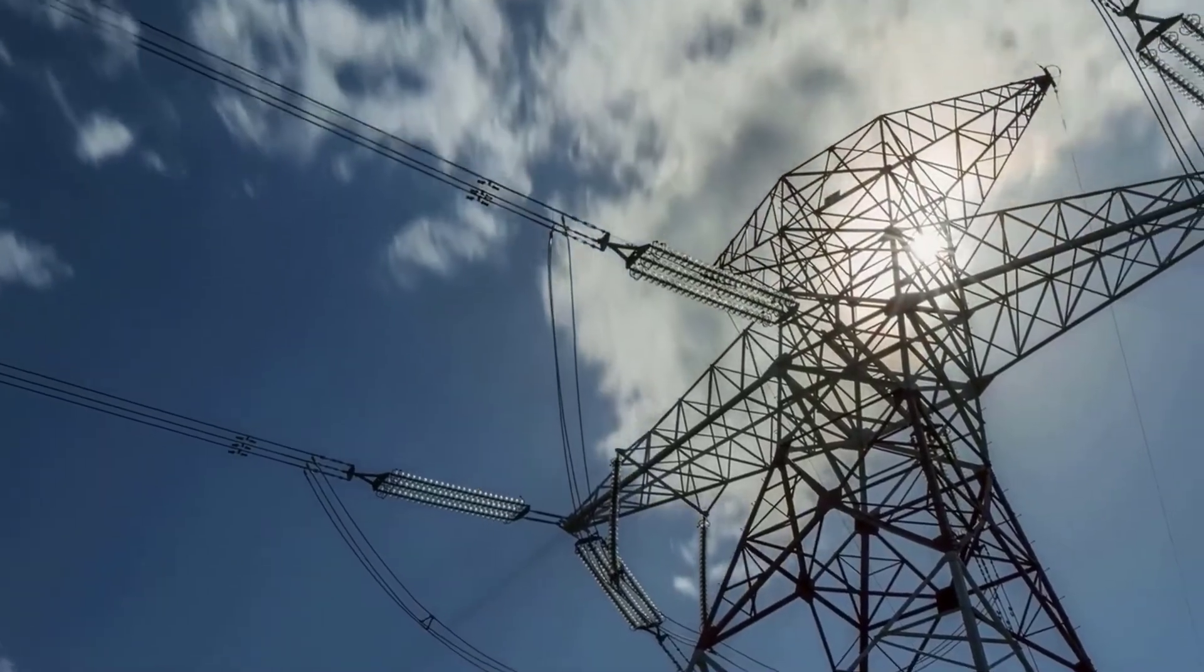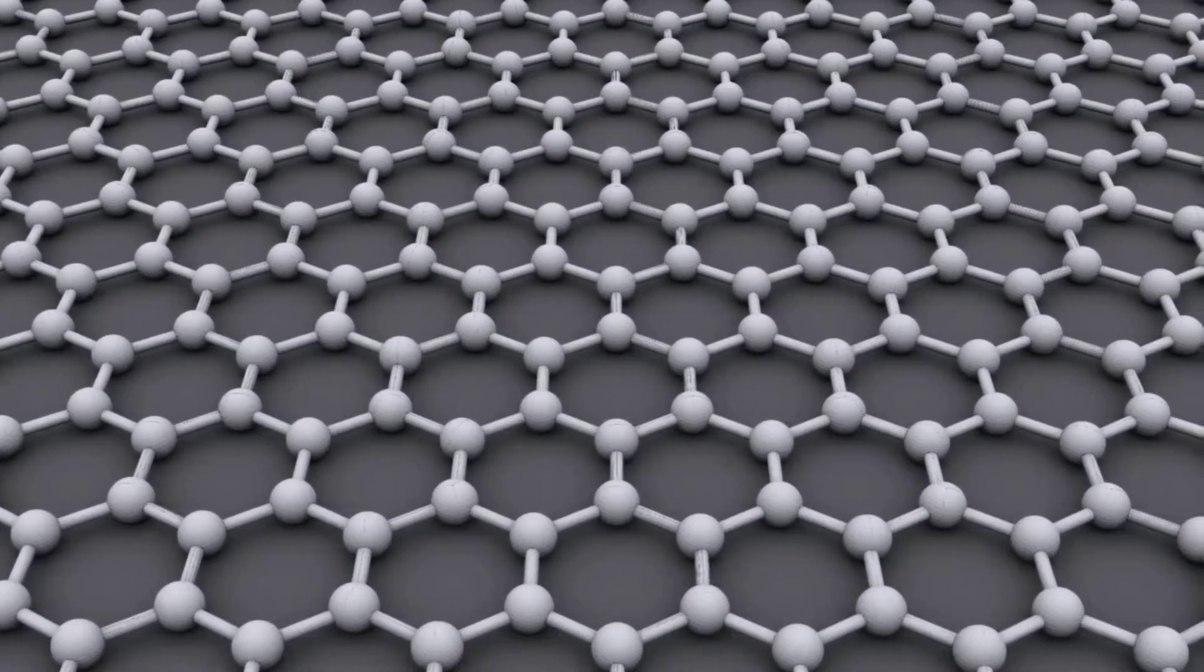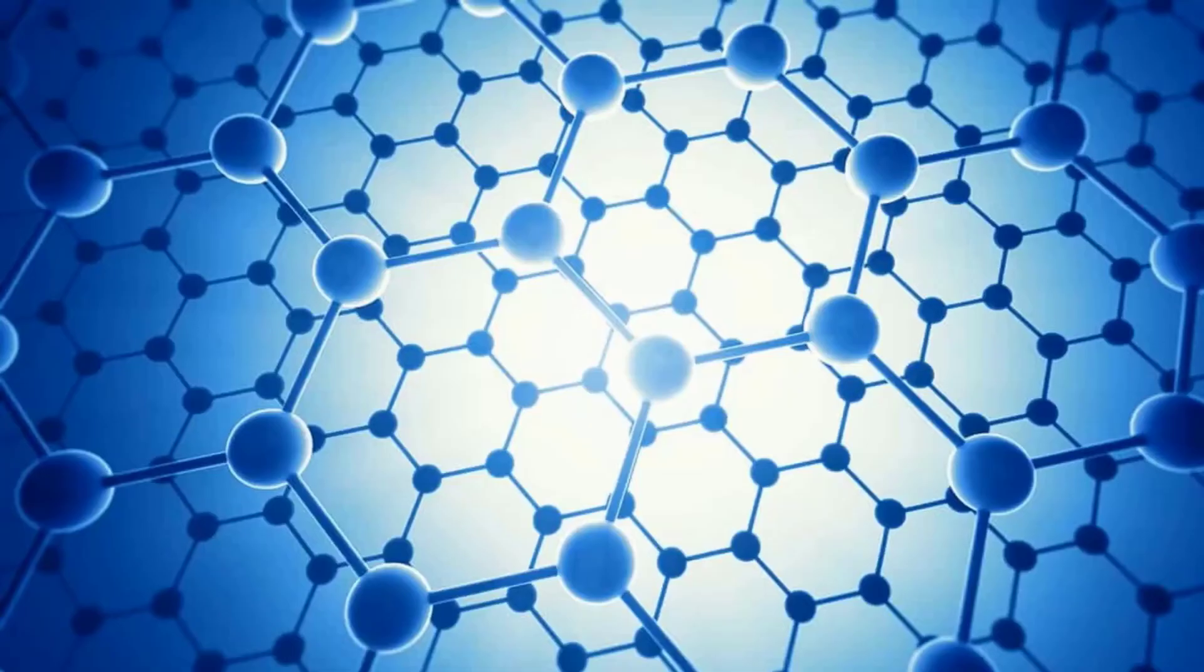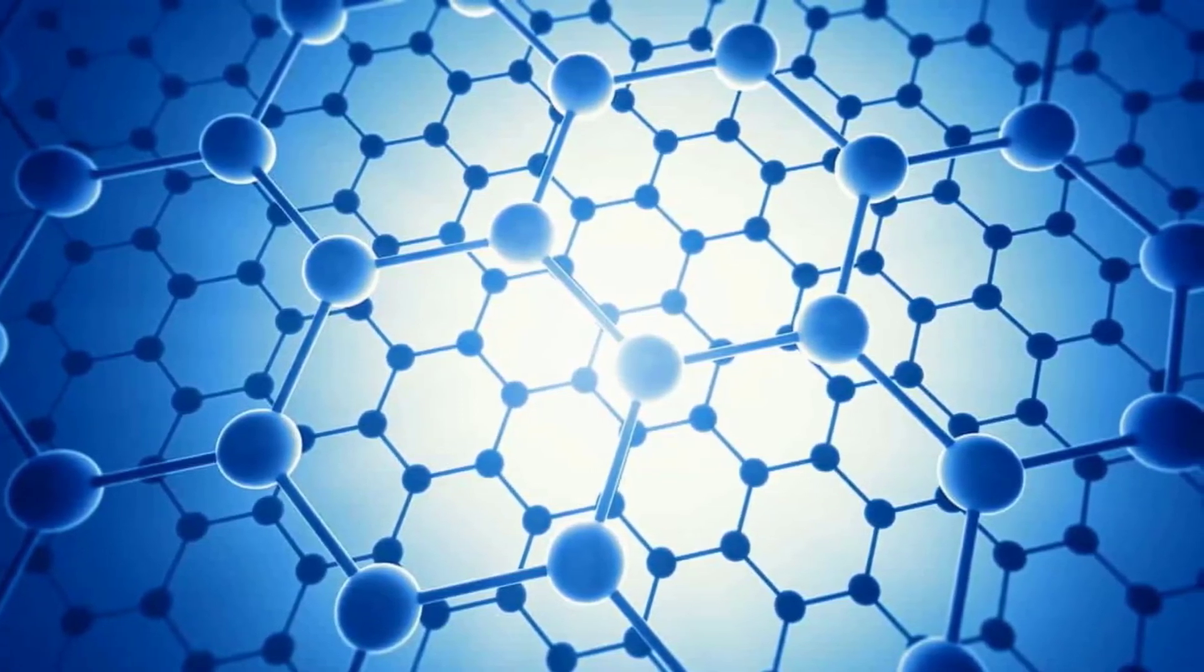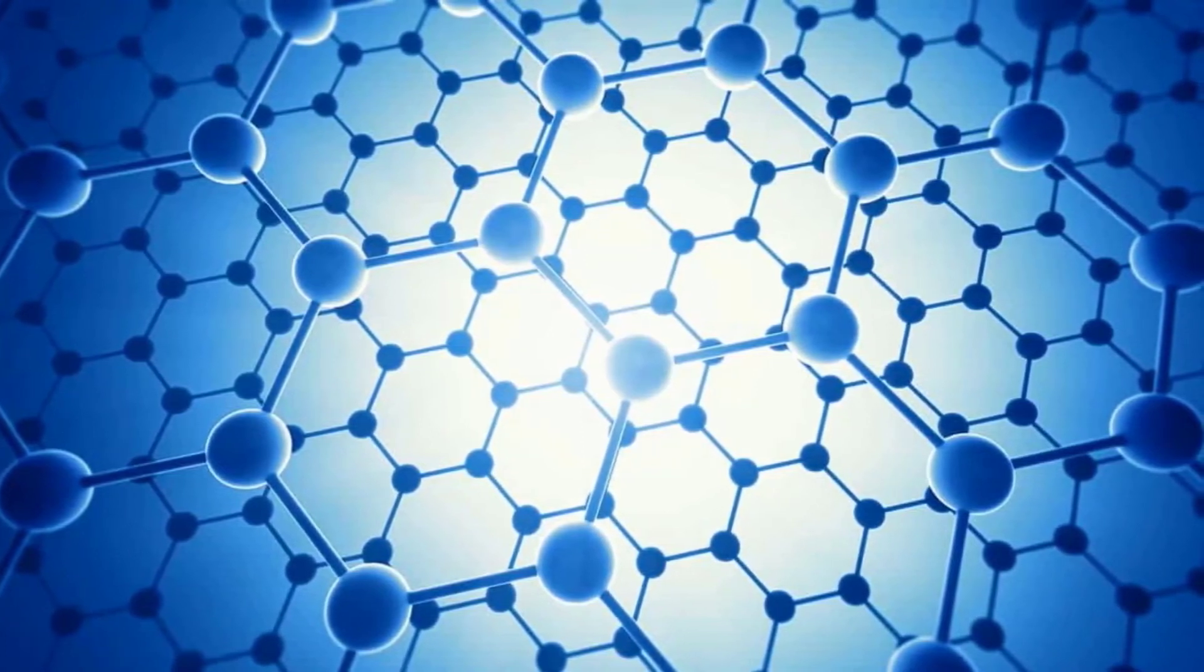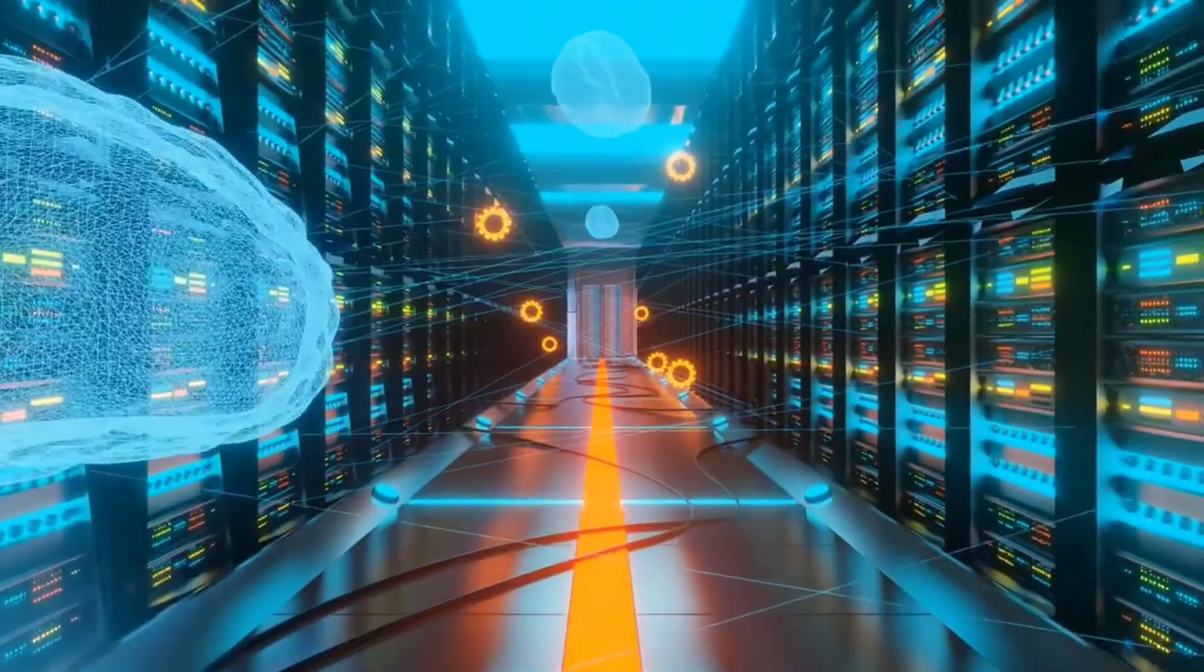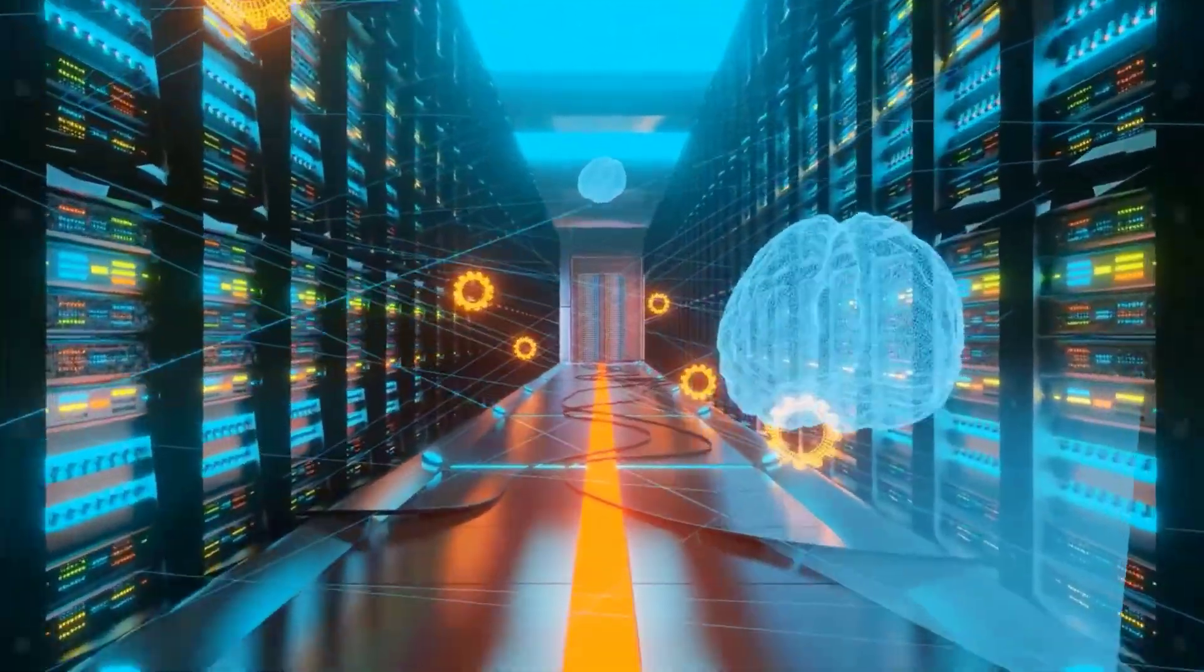Graphene is an excellent conductor of electricity and heat. It is also nearly transparent, yet so dense that it is impenetrable to even the smallest particles. Since then, graphene has been used in a variety of applications, including touch screens, flexible electronics, and water filtration. Graphene is also being investigated for use in other potential applications, such as energy storage, biomedical devices, and quantum computing.